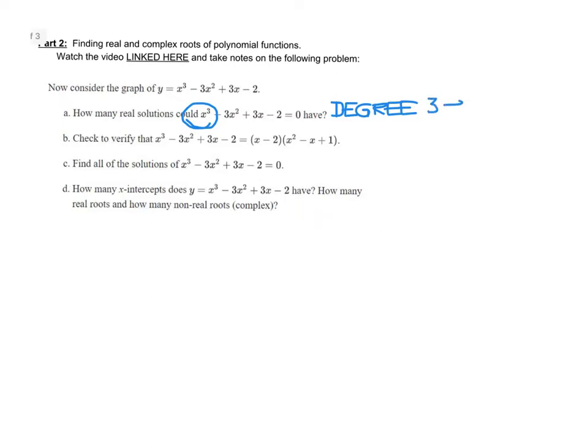So since it has a degree of 3, it's going to have at most or less than or equal to 3 real zeros or solutions. So it definitely will not cross that x-axis more than 3 times, at most 3 times.